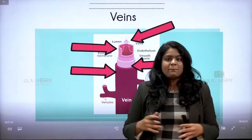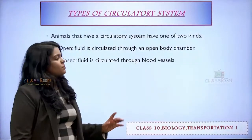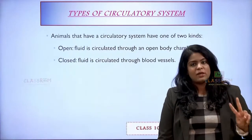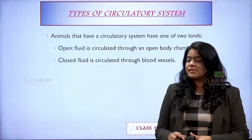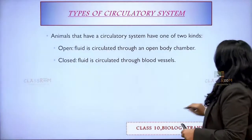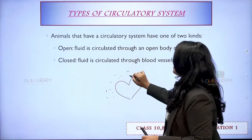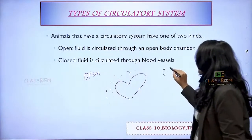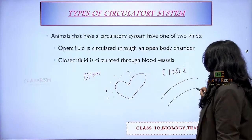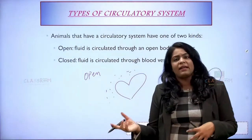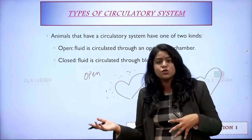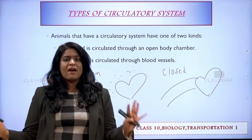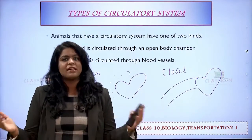Now let's talk about types of circulatory system again. There are two types: open type and closed type. In open type, there is no proper structure — just blood flowing everywhere. In closed type, blood vessels take blood away from and bring blood towards the heart. Which kind do we have? We have arteries, veins, and capillaries, so we are definitely a closed type of circulatory system.